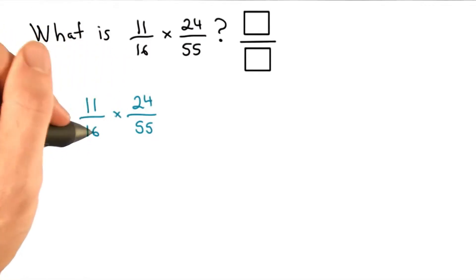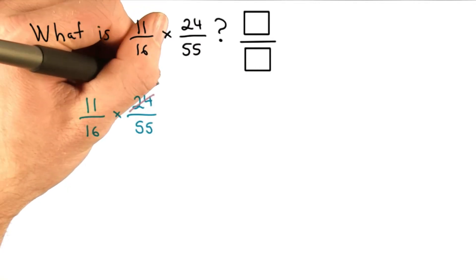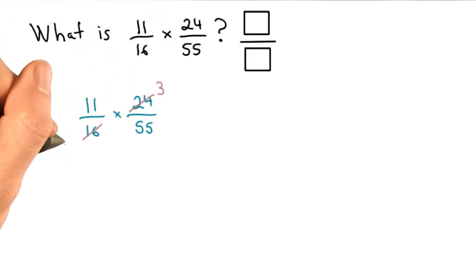I know 8 goes into 24 and 16, so I'll have an 8 over 8 in my answer, so let's get rid of that. 24 divided by 8 is 3, and 16 divided by 8 is 2.